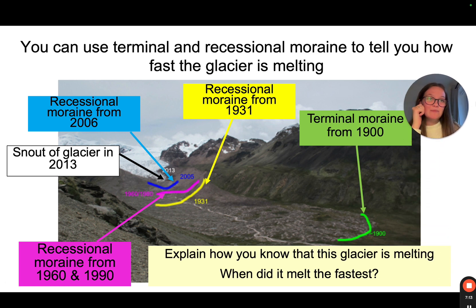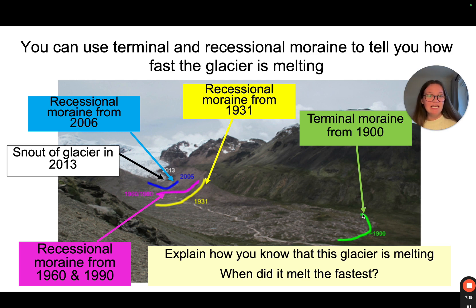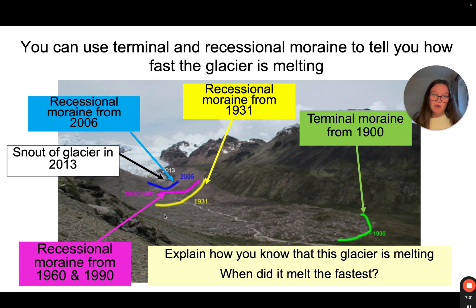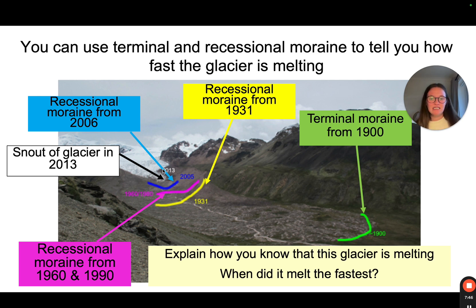We can use moraines to tell us how fast a glacier is moving. From this picture, in 1900 the terminal moraine shows how far forward the glacier ever got. A recessional moraine from 1931 shows it had retreated quite a lot in 31 years. There are recessional moraines from 1960, 1990, 2005, and 2013, suggesting the retreat slowed. Please answer the question: explain how you know this glacier is melting, and when did it melt fastest?